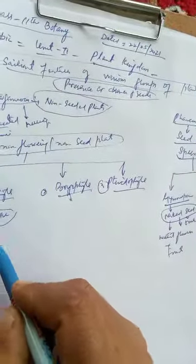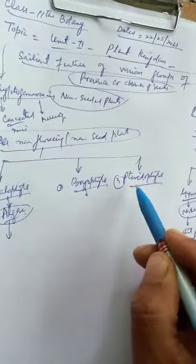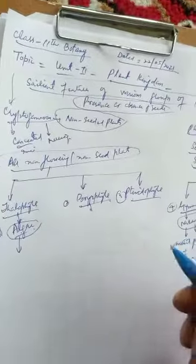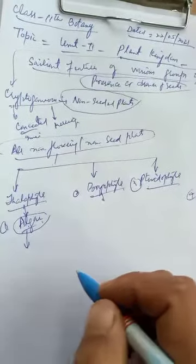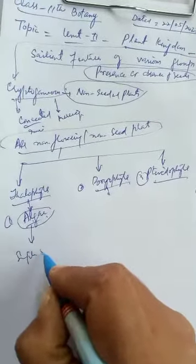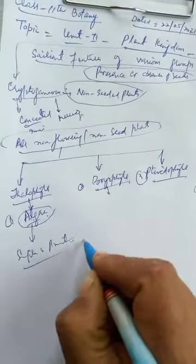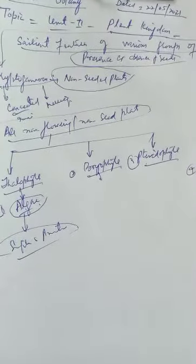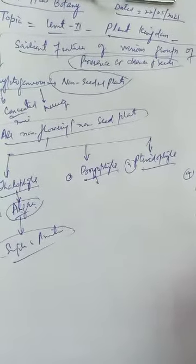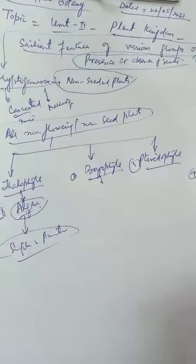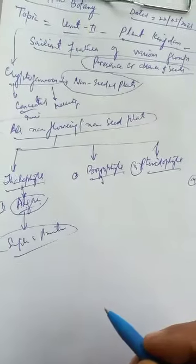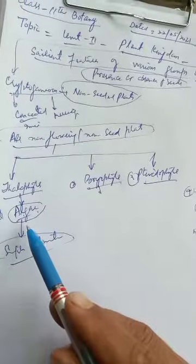So the five groups are: first, Algae; second, Bryophyta; third, Pteridophyta; fourth, Gymnosperms; and fifth, Angiosperms. Out of these, the simplest and most primitive plants are Algae, while Angiosperms are the most advanced and complex plants.